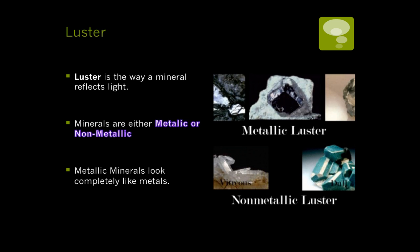Luster is the way the mineral reflects light. It's either metallic or non-metallic. If it is metallic, it looks like a piece of metal — it is not white or clear, not transparent, and doesn't have a fancy, pretty color. It looks either silver, gold, or like a piece of crumpled up aluminum foil.